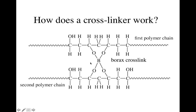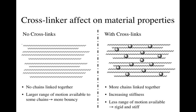During the reaction, the borax reacted with the polyvinyl alcohol and created what we call a cross-link. Here's the first polymer chain, here's the second polymer chain, and the borax combined the two pieces of the polymer chains together — that's called a cross-link. Materials with no cross-links have chains that do not link together and have a larger range of motion, making them more bouncy. With cross-links, more chains link together, increasing stiffness, and there's less range of motion available, making them more rigid and stiff.